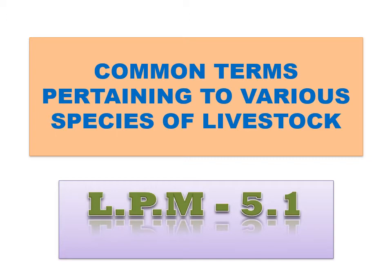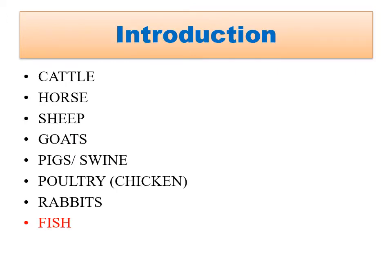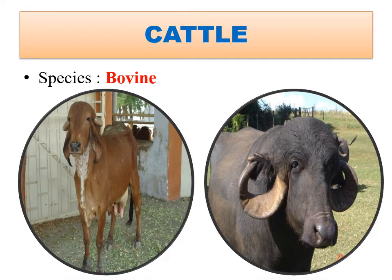We already learned that species means individuals having some common characteristics or qualities. The domesticated animals of our importance are cattle, buffalo, sheep, goat, horse, pig or swine, and poultry. Let's start with the terminology related to cattle and buffalo.